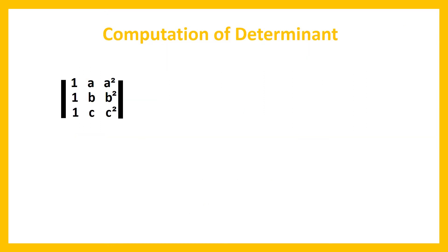Our first problem is to find the determinant of the matrix with entries 1, a, a², 1, b, b², 1, c, c².